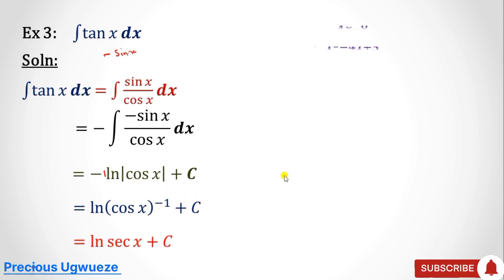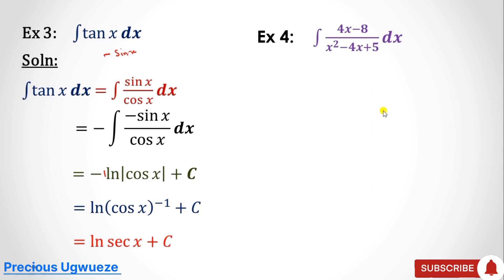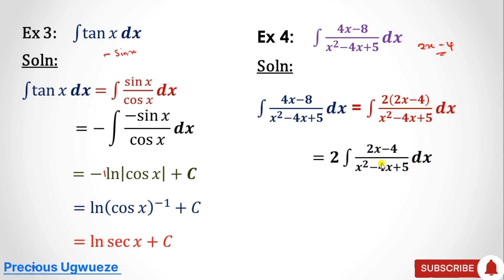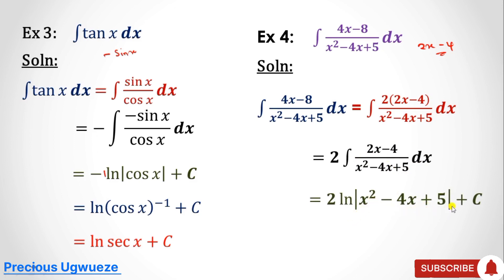The next example asks us to integrate (4x − 8) over a quadratic denominator. The first step is to differentiate the denominator, which gives 2x − 4. The numerator isn't exactly 2x − 4, but it can be simplified: factoring gives 2(2x − 4). We bring out the 2, apply the rule since the condition is now satisfied, and our solution is 2·ln|x² − 4x + 5| + C.